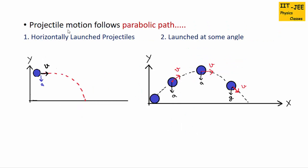Next, projectile motion follows a parabolic path. In projectile motion the object follows a curved path, and this curved path is like a parabola, so we call it a parabolic path.